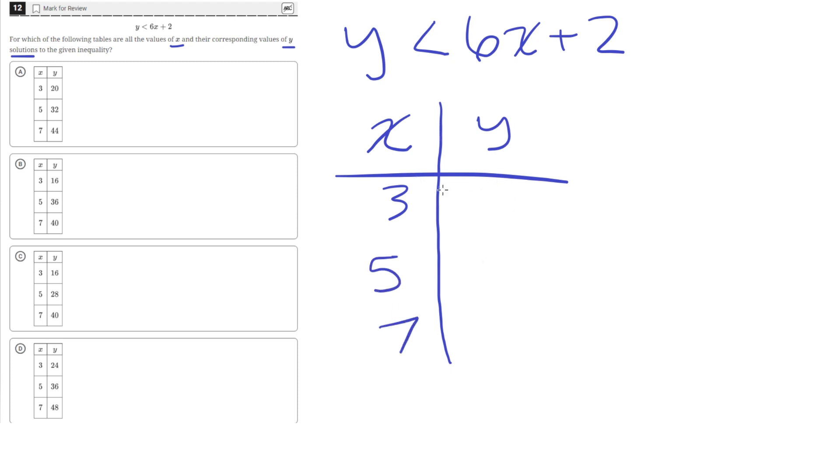And we'll find the value of y as if this were an equal sign. We'll just plug in x equals 3 to find the maximum value that y can be. So then we'll make sure that these y values here for the correct answer choice are all less than the maximum values for the corresponding x.